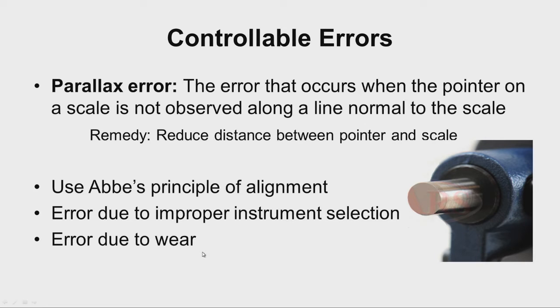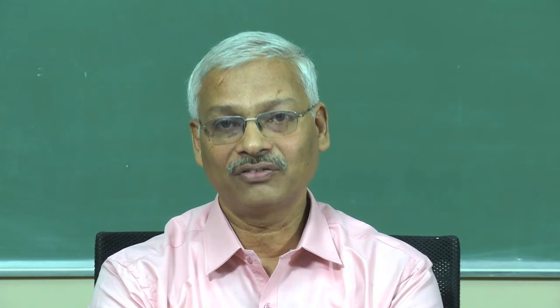Error may also occur due to wear. Due to continuous usage of measuring instruments, the measuring surfaces are subjected to wear. For example, the faces of the measuring jaws of a vernier caliper are subjected to wear. Similarly, the anvil face and spindle face of a micrometer are subjected to wear. Wherever possible we should try to adjust the instrument so that the error is made zero; otherwise we have to calibrate the instruments, note down the error, and account for it when presenting measurement results.